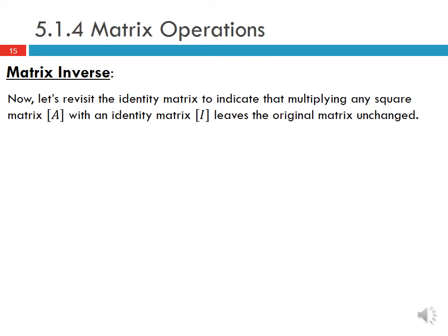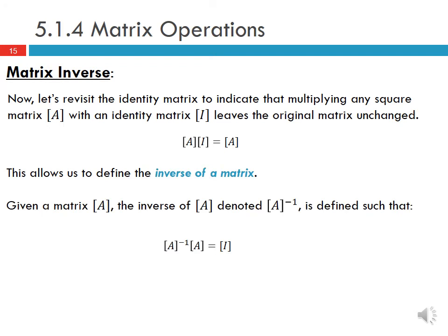Multiplying any square matrix A by the identity matrix I leaves it unchanged: A times I equals A. This allows us to define the matrix inverse. Given matrix A, its inverse is denoted A⁻¹ and is defined such that A⁻¹ times A equals I, and also A times A⁻¹ equals I. When multiplying a matrix by its inverse, the order does not matter — either way you get the identity matrix.